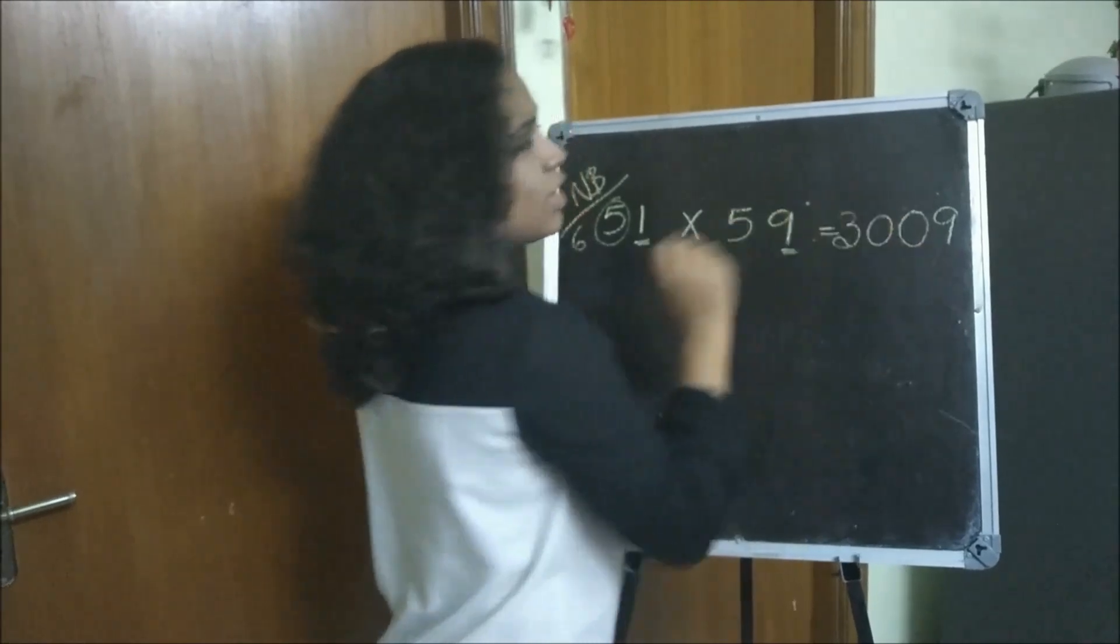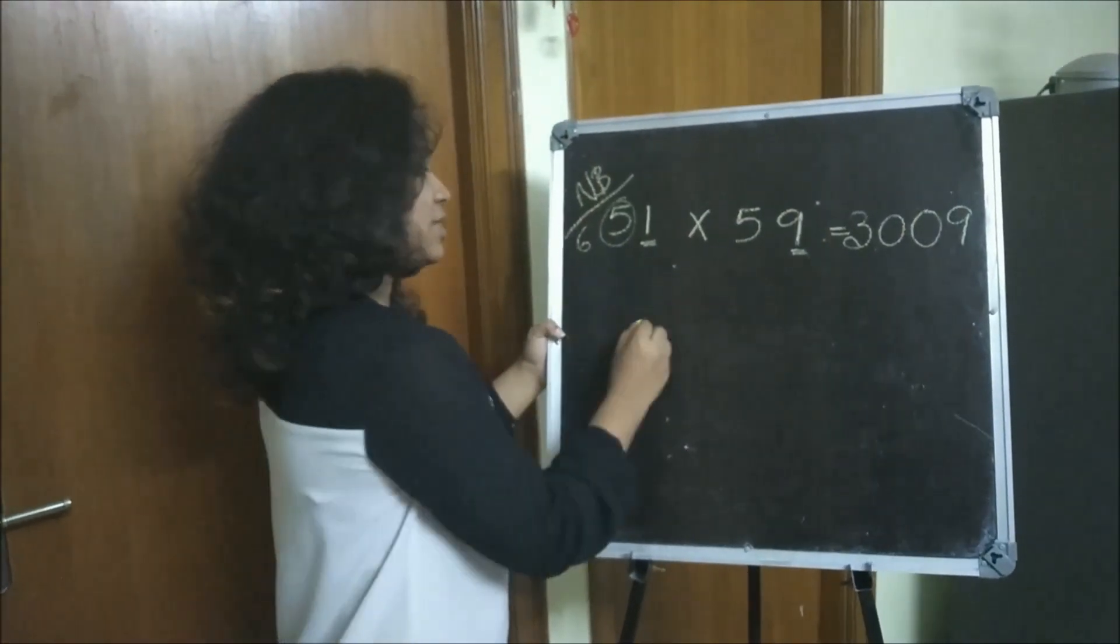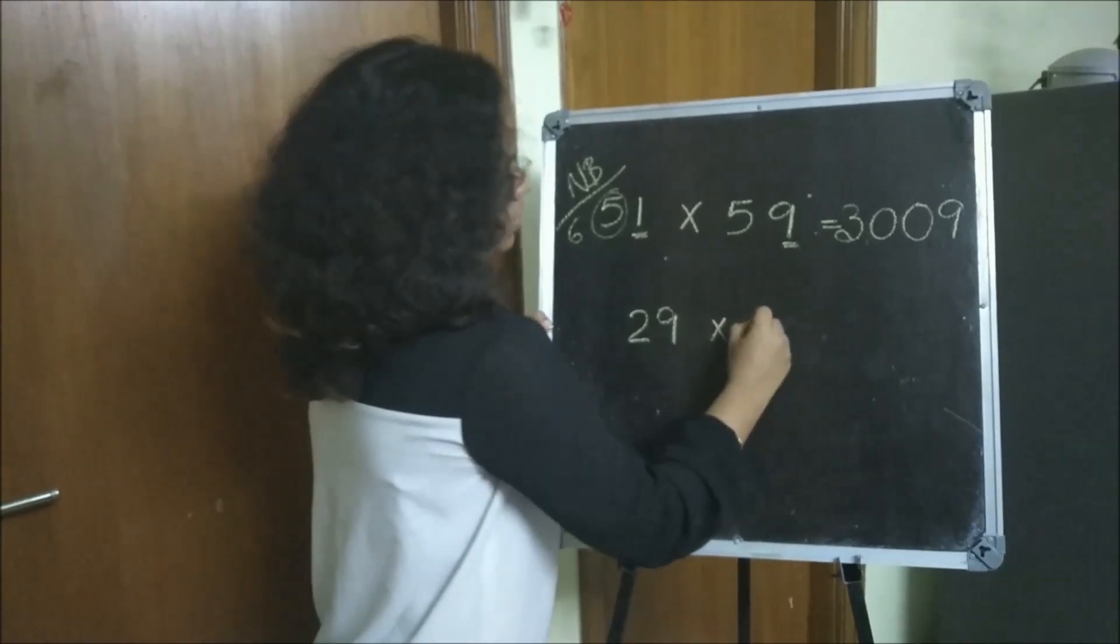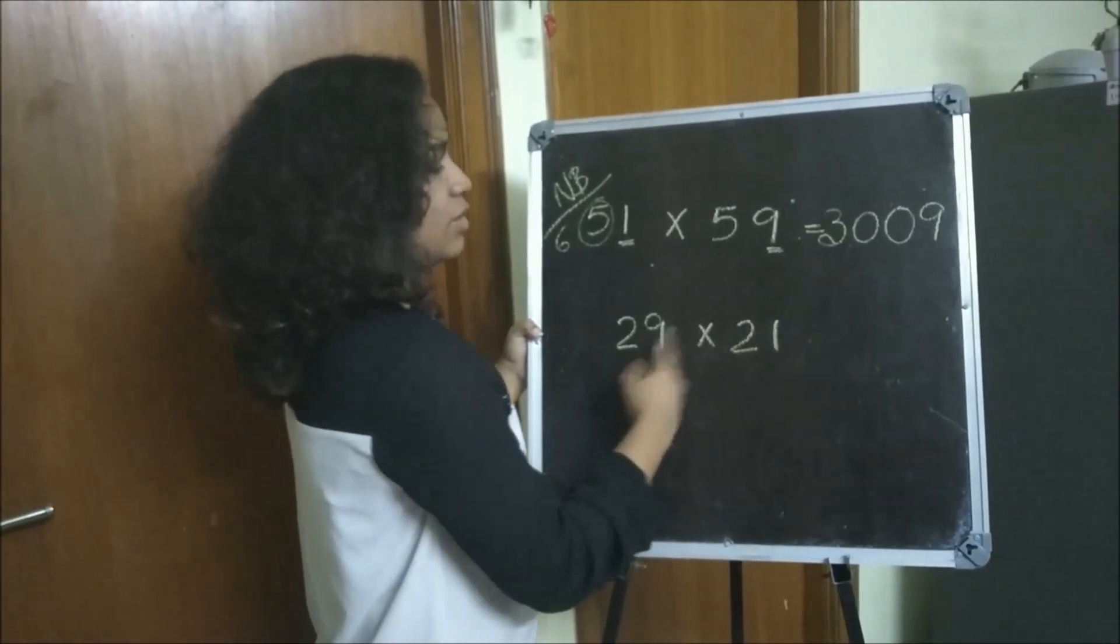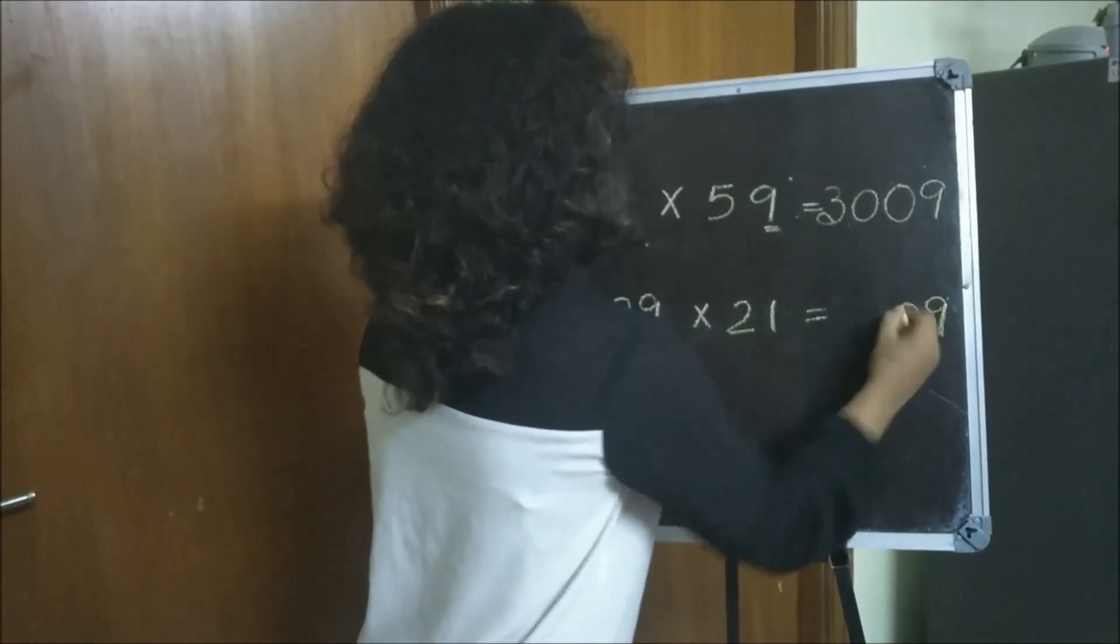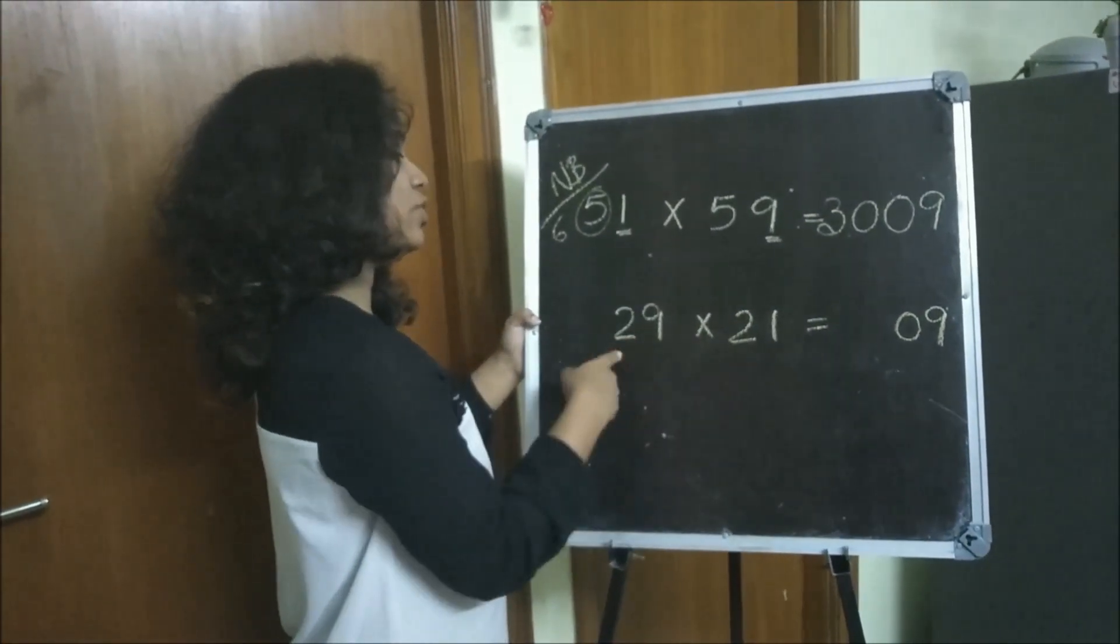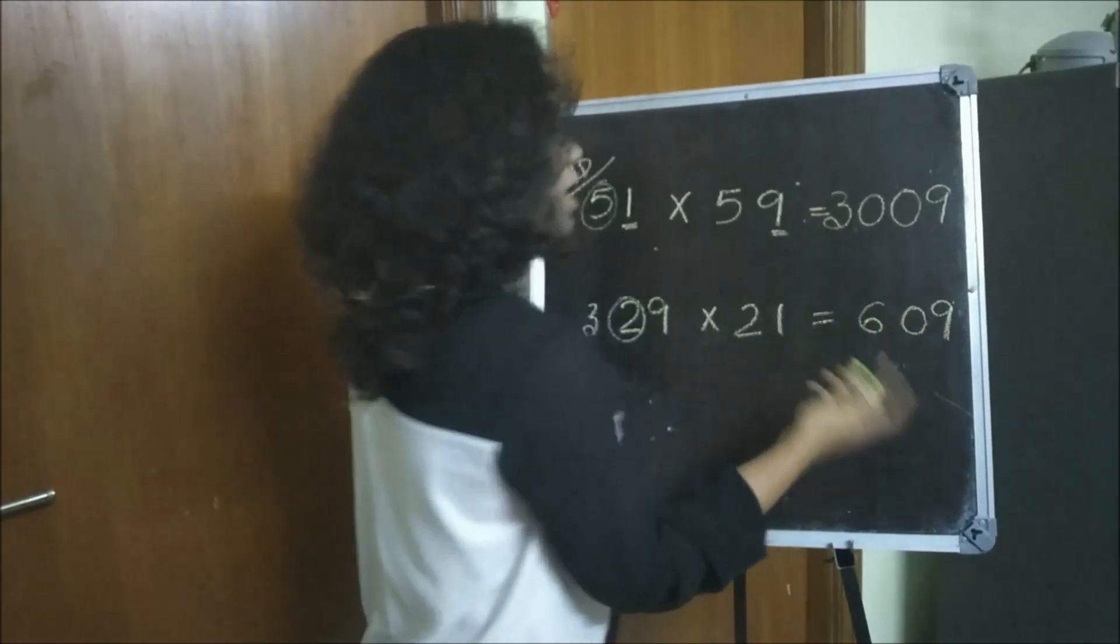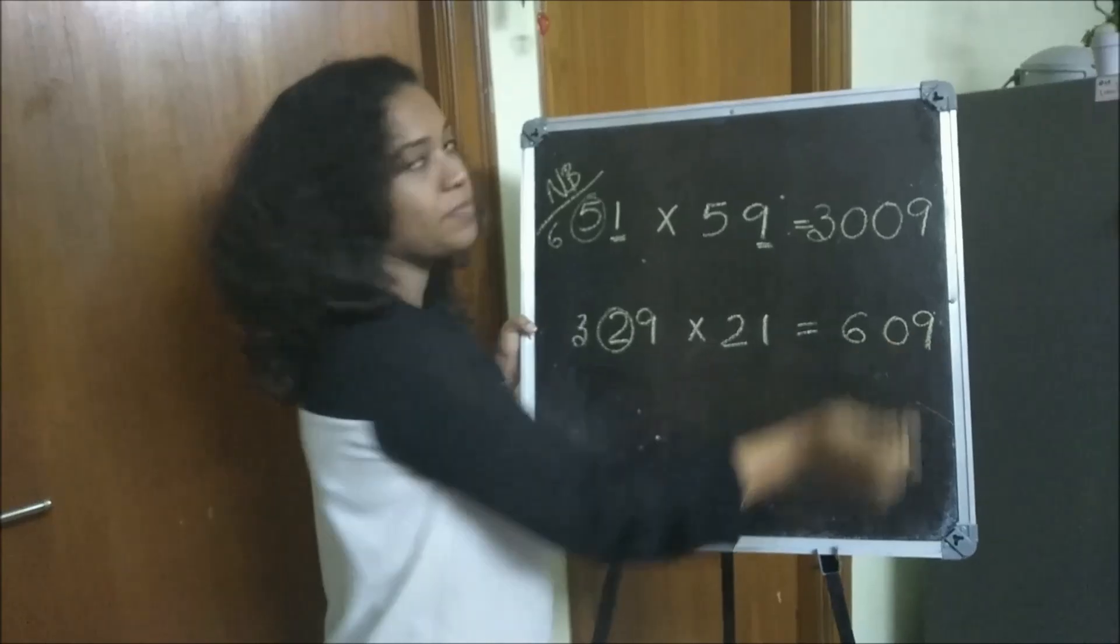So 3009 will be your answer. Let's try 29 into 21. 1 into 9 is 9, add a 0. 2 into 3 is 6, so your answer is 609.